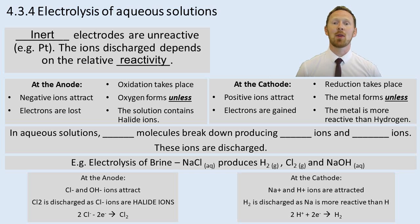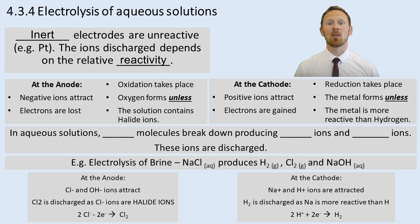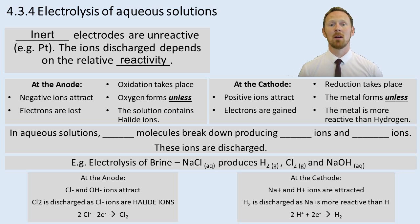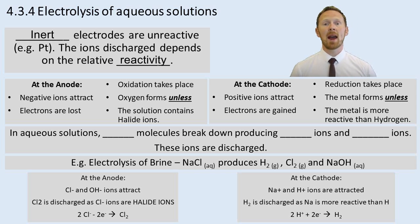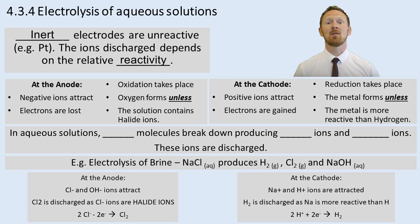At the cathode, positive ions are attracted, electrons are gained, and reduction takes place. Metal atoms form unless the metal is more reactive than hydrogen. If the metal is more reactive than hydrogen then hydrogen forms. If the metal is less reactive than hydrogen then the metal atoms form.